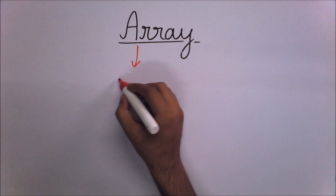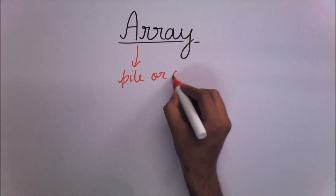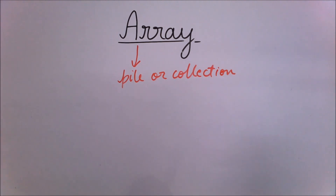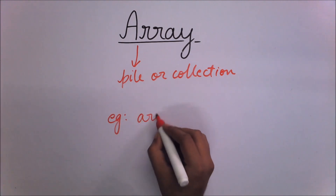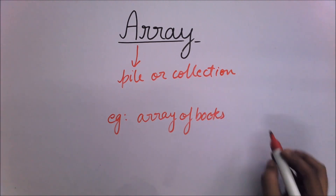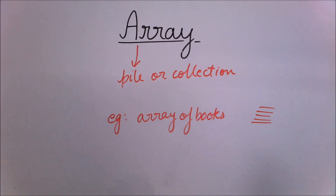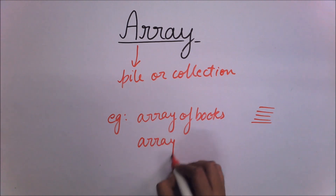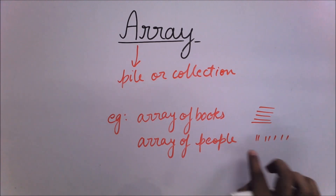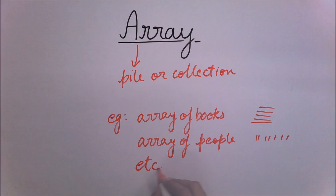What's an array? Basically, if you see the definition of array, an array means a pile or collection of some objects. For example, it can be an array of books — if you take so many books and just arrange them like this, it can be an array of books. It can be an array of people — if you make people stand one after another, it can be an array of people. So a collection of many objects is known as an array.